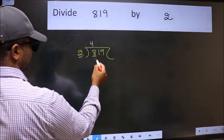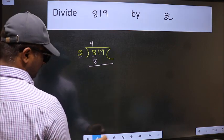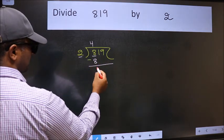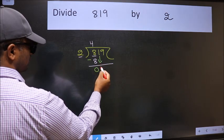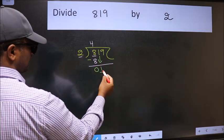2 times 4 is 8. Now we should subtract. We get 0. After this, bring down the beside number, so 1 down. Now here we have 1 and here 2.